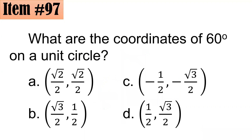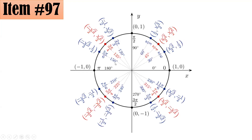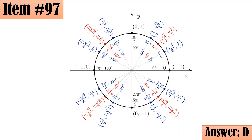Item 97: What are the coordinates of 60 degrees on a unit circle? On the unit circle with center at the origin and radius 1, the coordinates at 60° are (1/2, √3/2). This can be derived using the 30-60-90 triangle concept. Letter D.